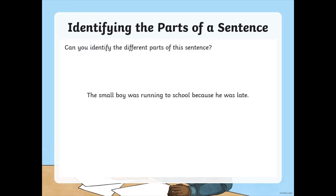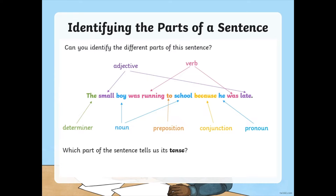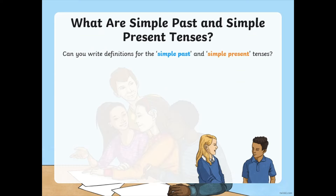Can you identify the different parts of this sentence? 'The small boy was running to school because he was late.' What makes up this sentence? Maybe you could find some adjectives, maybe an adverb. I've got a determiner at the start, adjectives, nouns, verbs, a preposition, a conjunction, as well as a pronoun. All of these different parts make up this sentence, but which one tells us about the tense — when it was taking place? Of course, it is the verb. The verbs are the ones that tell us what tense we are writing.